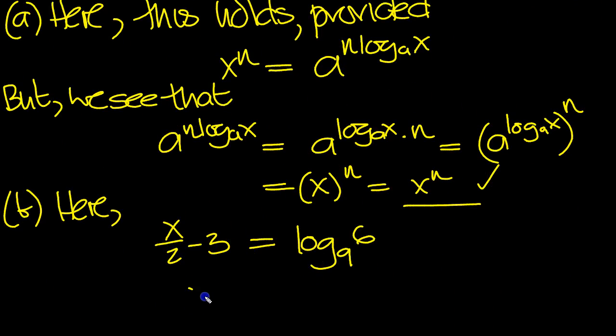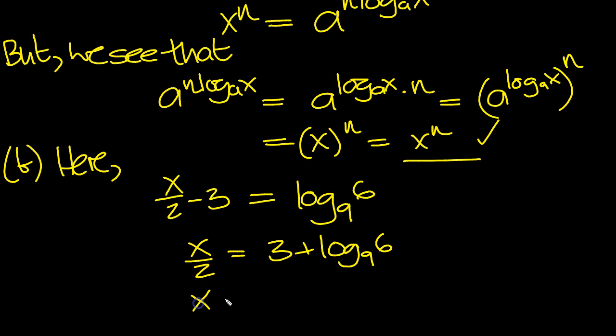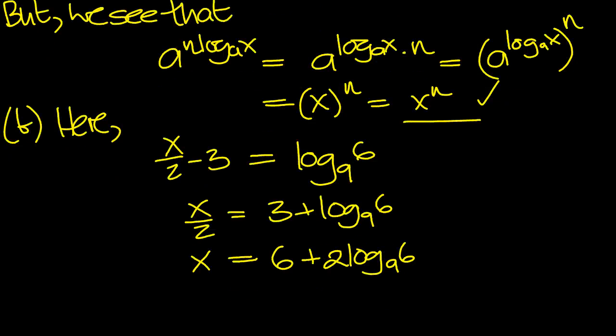So now move the 3 over: 3 plus log 9 of 6. And then multiply by 2, move the 2 from divide to times on the other side, which is log 9 of 36, really, isn't it?